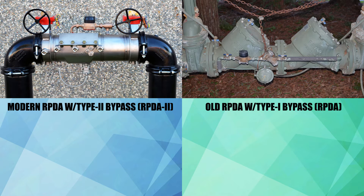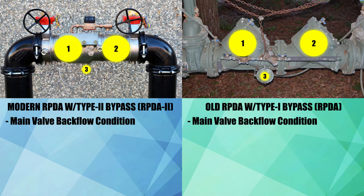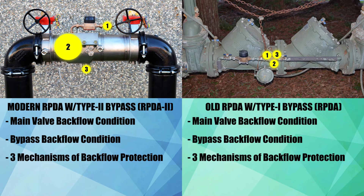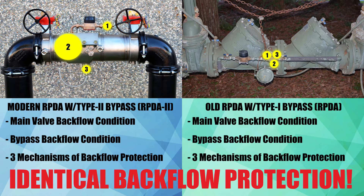Both the modern RPDA Type 2 and the old RPDA Type 1 protect both the main valve and the bypass flow paths with two check valves and a relief valve, providing identical protection to your potable water system.